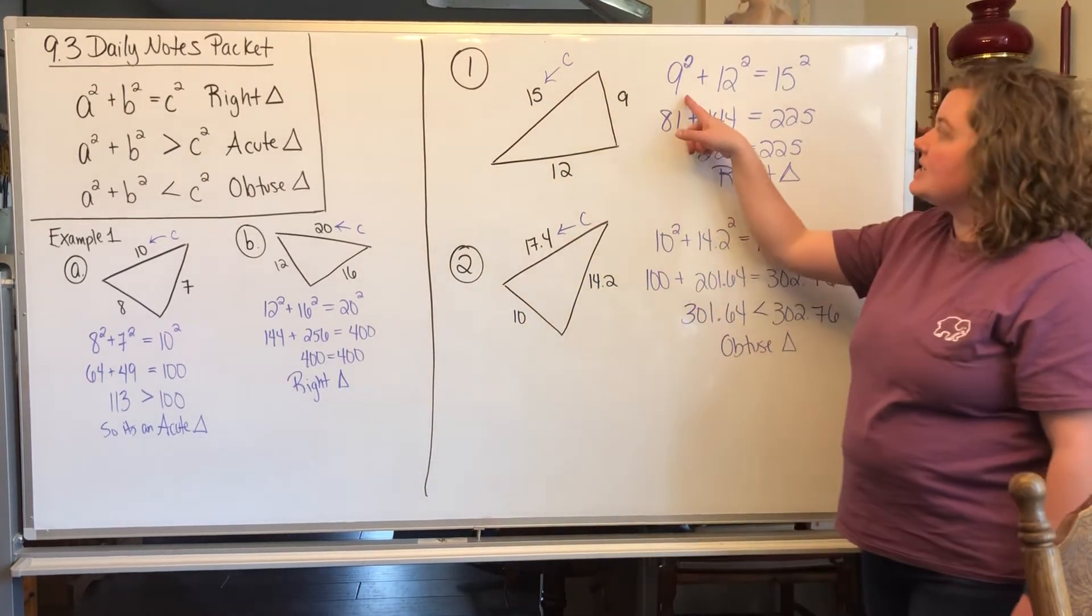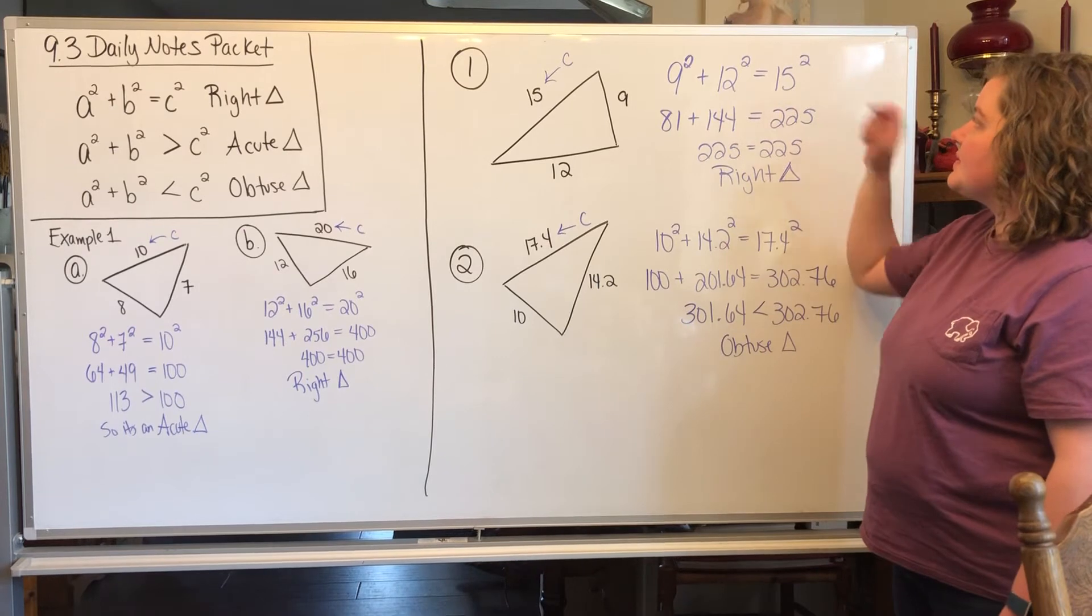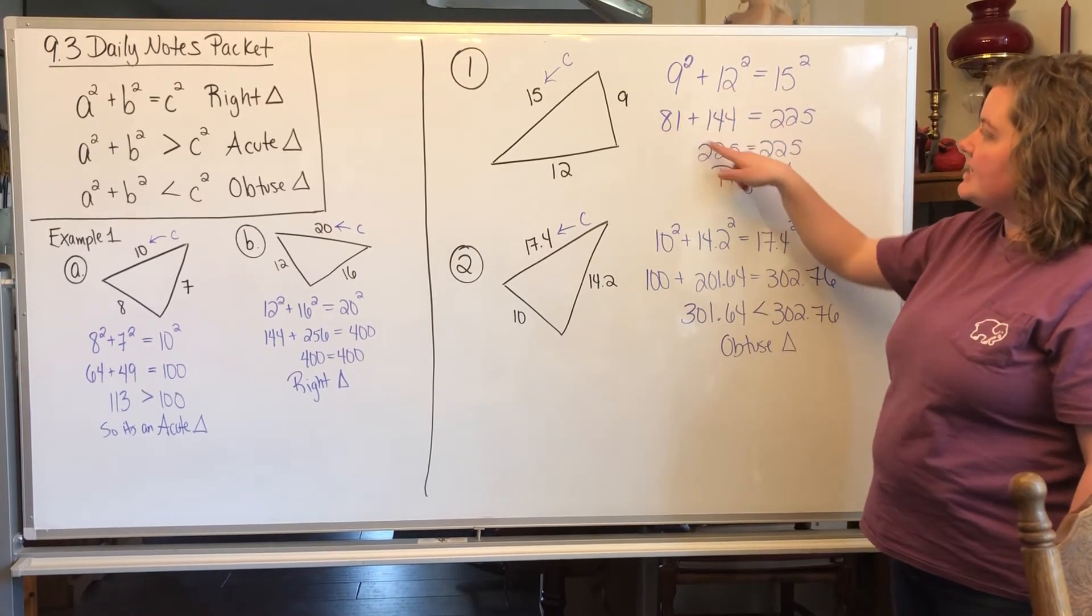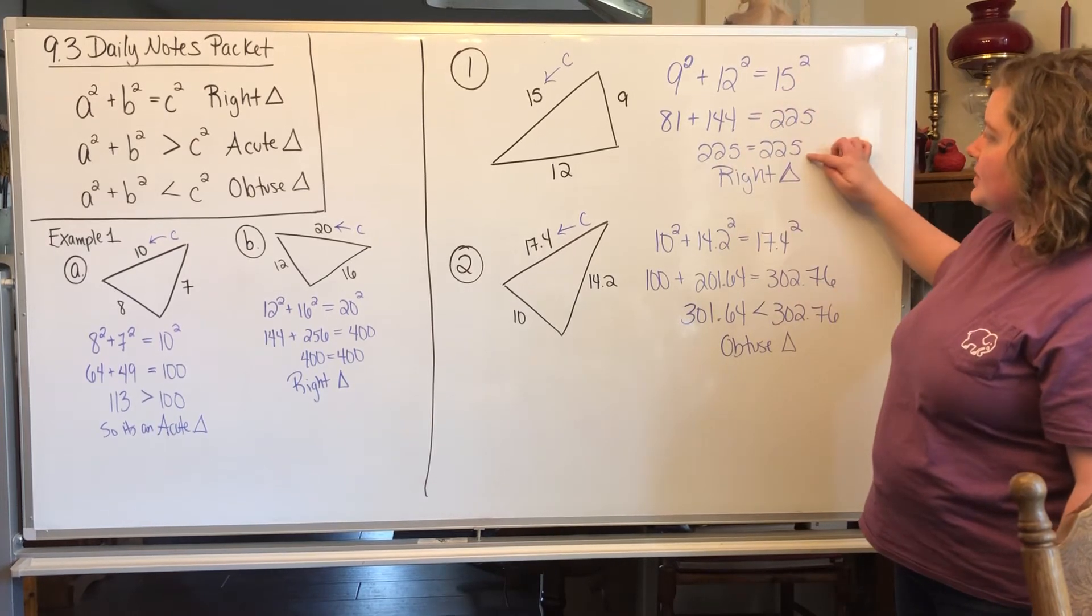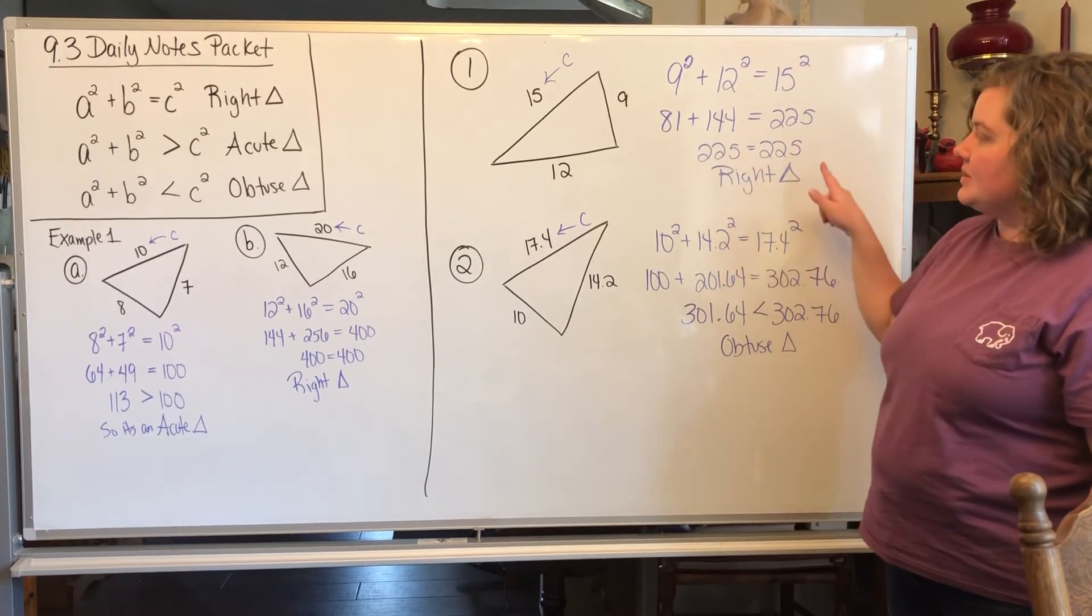So you're going to do 9² + 12² = 15². When you square those and add together, here you get 225. 15² is 225, those equal, so it's a right triangle.